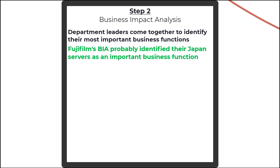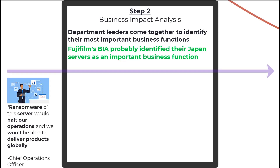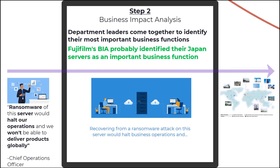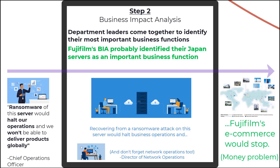During the Business Impact Analysis, a chief operations officer would say something to the effect that if this one critical server were to be held hostage by ransomware, the company would not only lose their ability to deliver products globally, but losing the data and trying to recover from it would halt operations as well. The director of network operations could also chime in that if ransomware were to happen on the server, it would require the shutdown of networking capabilities not only in Japan but on multiple other continents.